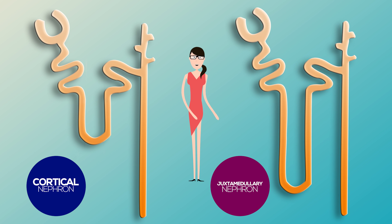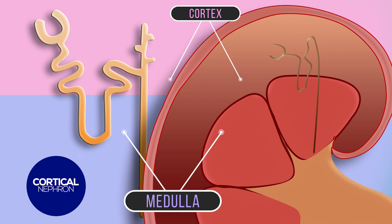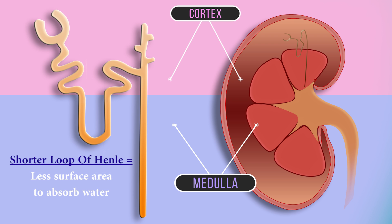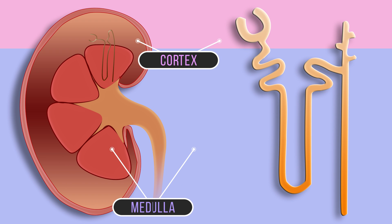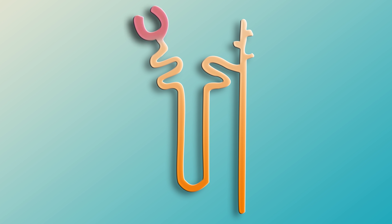There are two types of nephrons: cortical nephrons and juxtamedullary nephrons, situated in different parts of the kidney with different uses. Cortical nephrons are found in the cortex and have relatively short loops of Henle that just extend into the medulla. Under normal conditions of water availability, these nephrons deal with the control of blood volume, since shorter loops of Henle mean less surface area to retain water. Juxtamedullary nephrons have their renal corpuscles close to the junction of the cortex and medulla, with very long loops of Henle extending deep into the medulla. When water is in short supply, increased water retention occurs through the juxtamedullary nephrons, since longer loops of Henle mean more surface area to retain water.